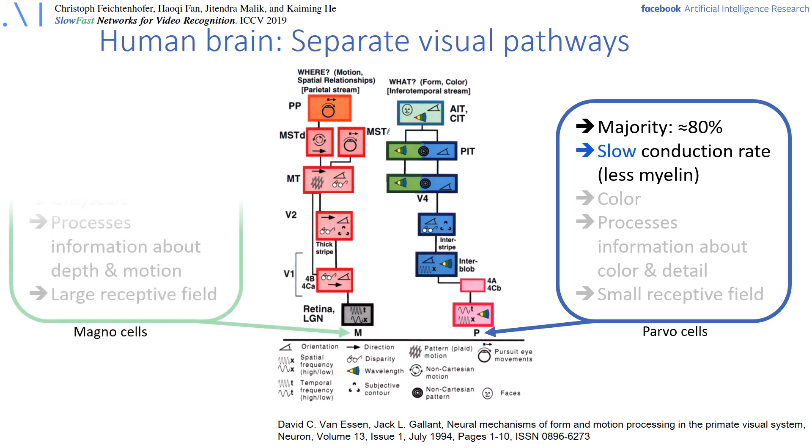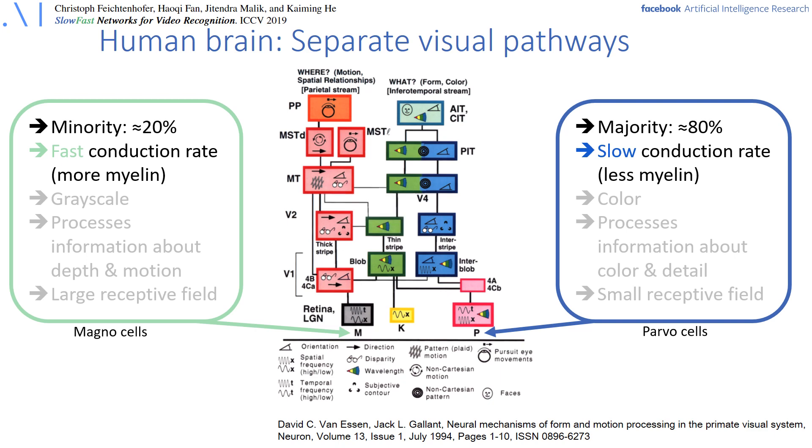The dorsal or where pathway, on the other hand, is responsible for motion recognition. It builds upon magno cells, M-cells. These cells amount to less than just 20% of the cells in the retina and can only process coarse grayscale information. However, they operate at a fast refreshing rate. Notably, we also see lateral connections between the two pathways.